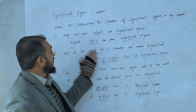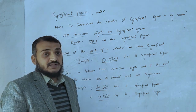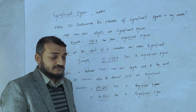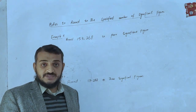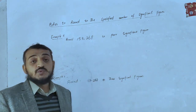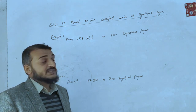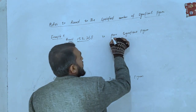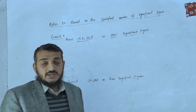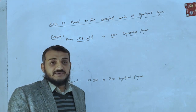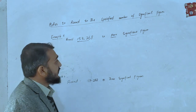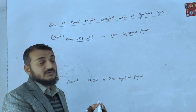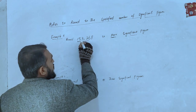Now if we need to round a number to a given number of significant figures, we apply the rounding rules. For example, the number 153268 rounded to 4 significant figures — we look at the 4th digit and the digit that follows.